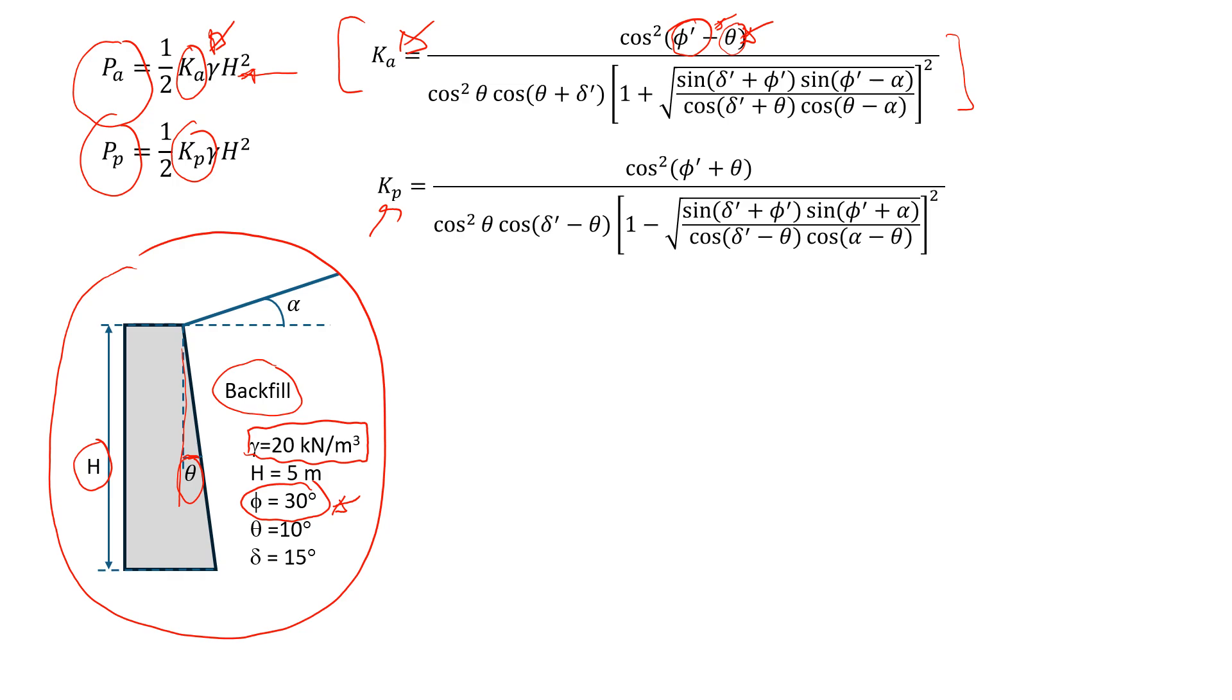Also, we have delta, which is friction between the retaining wall, let's say concrete retaining wall, and the backfill. In many cases, the assumption is made that it's going to be half of the friction angle of the soil. So if here we have 30 degrees divided by 2, it will give us 15 degrees, that will be the friction.